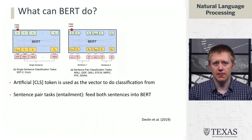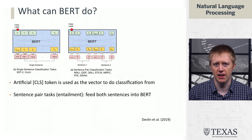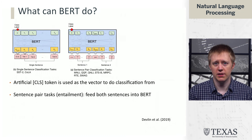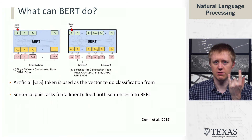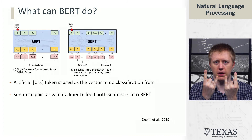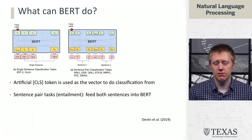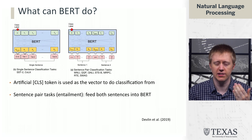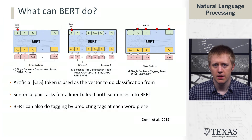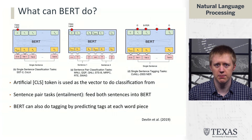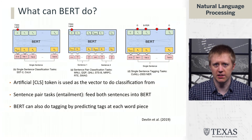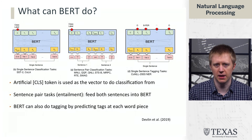One of the big advantages of BERT compared to prior work was that it could do sentence pair tasks a lot better. For example, paraphrase detection — can you tell whether two sentences are paraphrases of each other? You just feed the sentences together into BERT and use the CLS embedding to do classification. BERT can also do tagging, similar to LSTMs. Any model that produces a contextual embedding of each token can map that embedding into something like an NER tag.